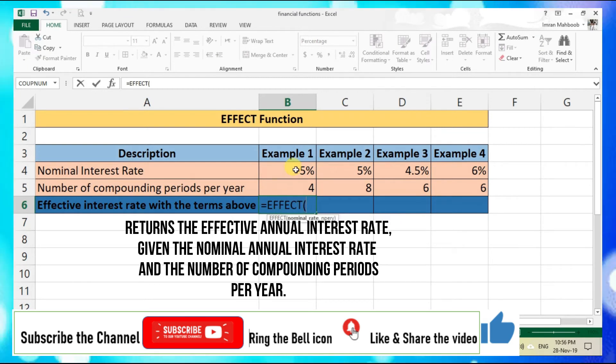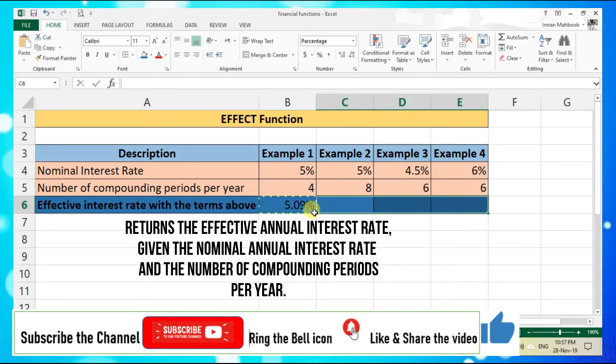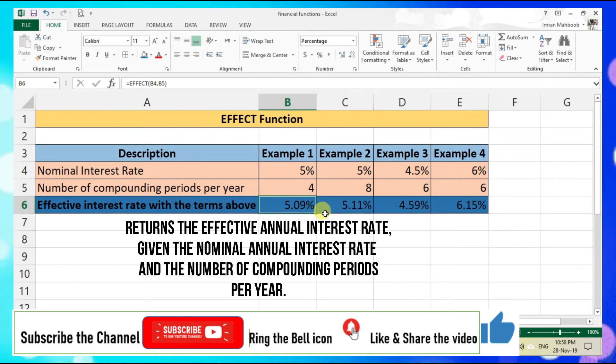Equals EFFECT, open parenthesis, select the nominal interest rate comma, select the compounding period per year, close parenthesis and enter. So here we have the effective interest rate against the given terms. To apply the function in the rest of three examples, I will just copy the formula from example 1 and simply paste into the other three examples. This is quite simple and easy to extract the effective rate under different given scenarios.